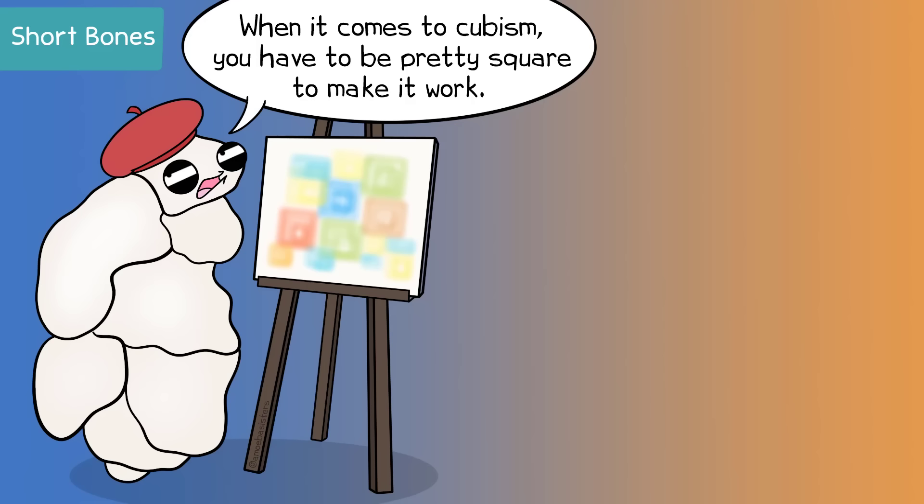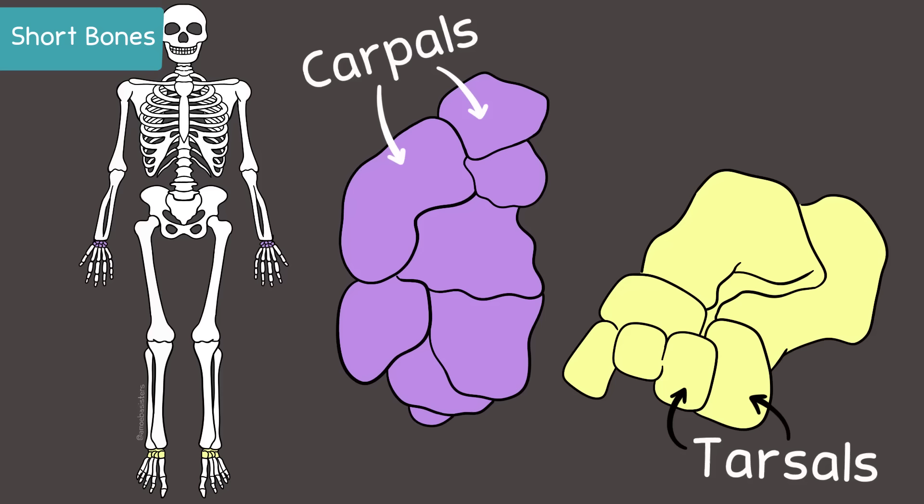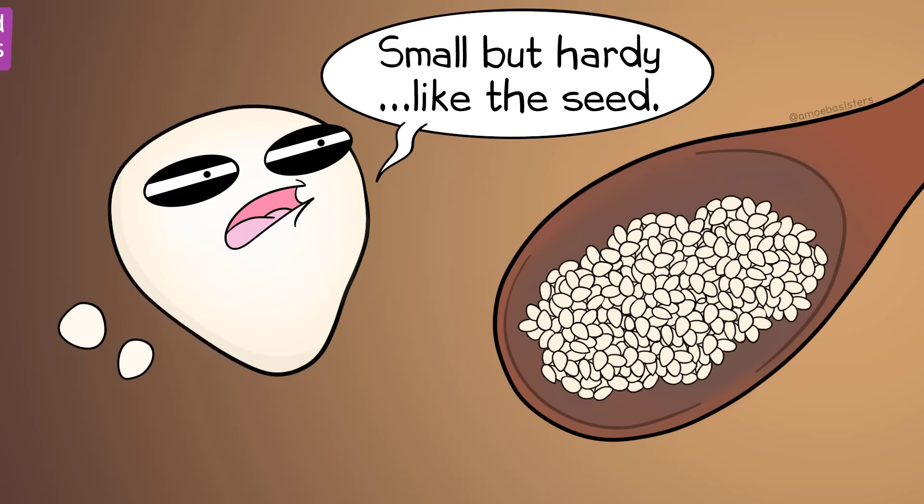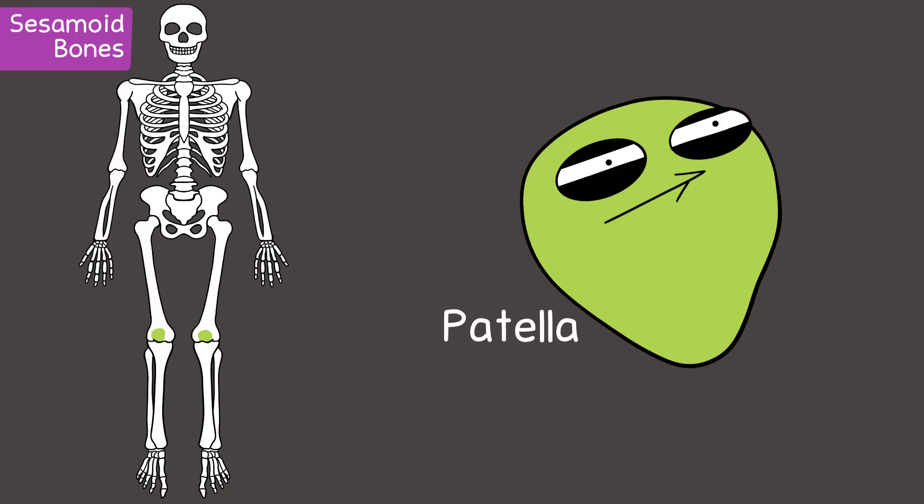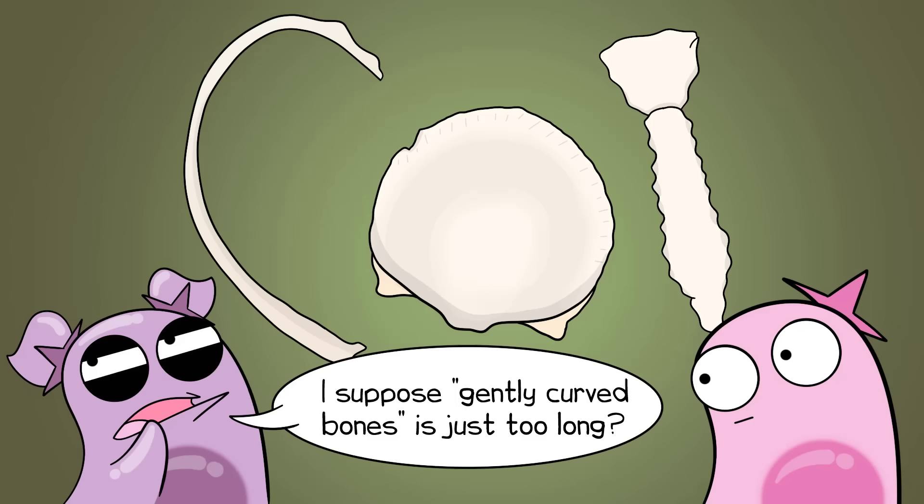Short bones are more cube-like, as their length and width are close to equal. These bones are also moved using muscle contraction and can offer stability. Carpals in the wrist and tarsals of the ankle are examples. Sesamoid bones are roundish, like a sesame seed, and are great at handling pressure. The patella is an example.